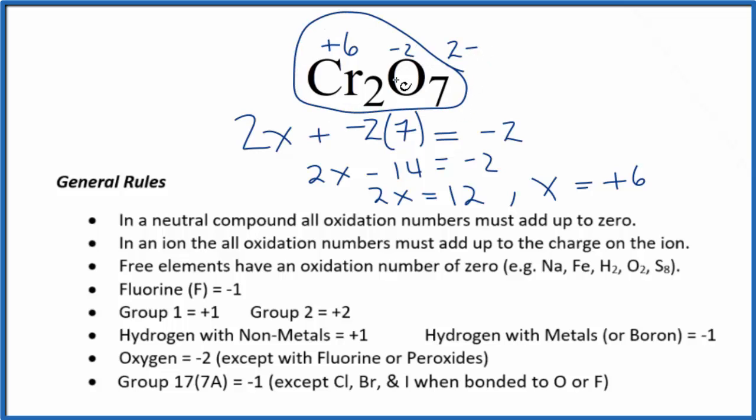We said oxygen is minus 2. So 2 times plus 6 is plus 12 minus 14. Plus 12 and minus 14 gives us the charge on the ion.